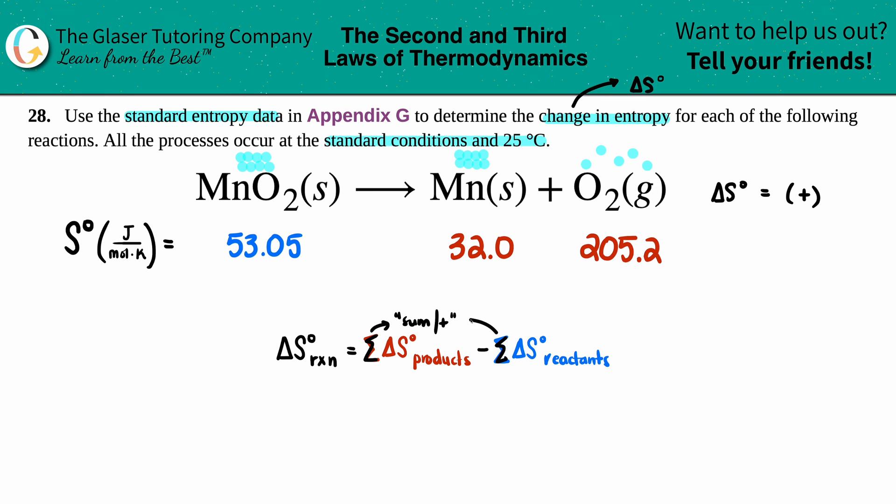So products minus reactants, you just got to add them up. Now are these values going to be the same? Well, it all comes down to the balanced equation. Keep in mind that for all of these you had only one of each: you had one MnO2, you had one Mn, and one O2, and these values are always for one mole. But just for practice, let's just say you had two Mns—you would have to take your 32 and times it by two. But since they're all ones, I'm just going to multiply all of them by one.